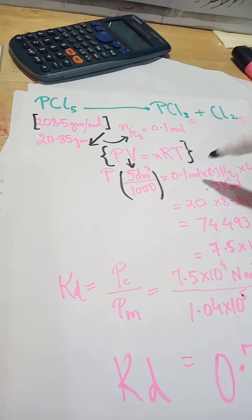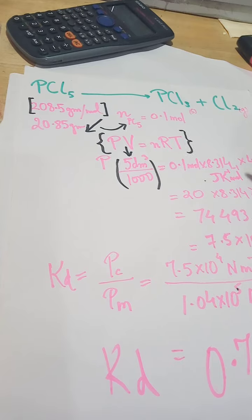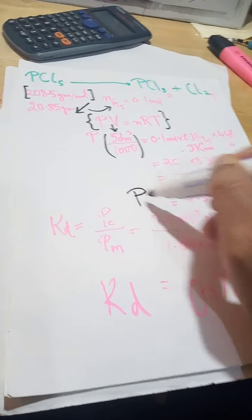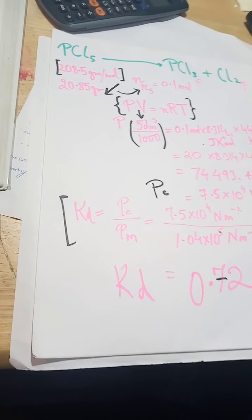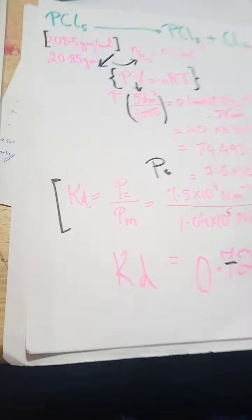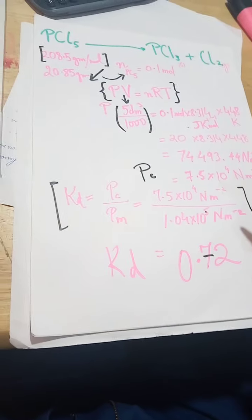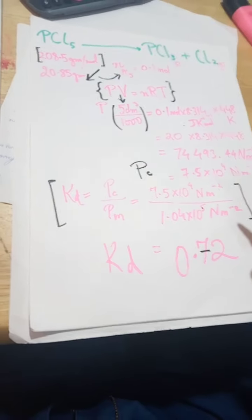So now, in order to calculate the dissociation constant, we need to divide the calculated pressure by the measured pressure. So that'll be 7.5 times 10 to the power 4 newtons per metre squared, of course, every single time, mention the units, divided by 1.04 times 10 to the power 5 newtons per metre squared. We get 0.72. So the dissociation constant is 0.72.